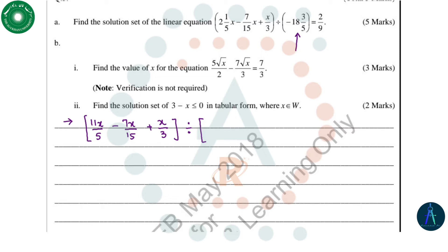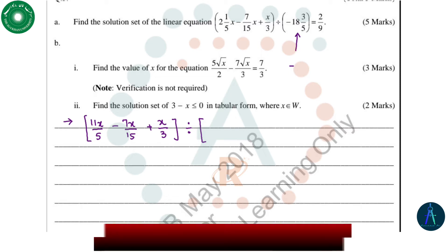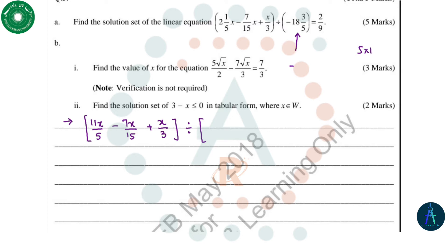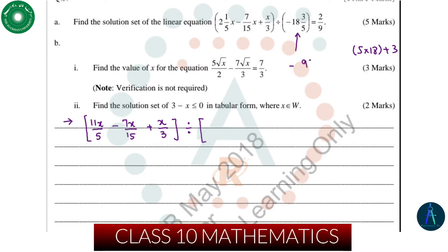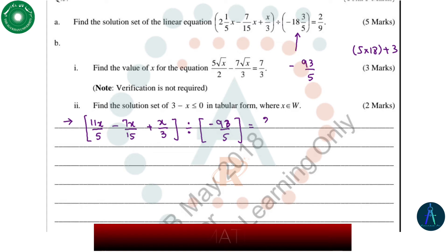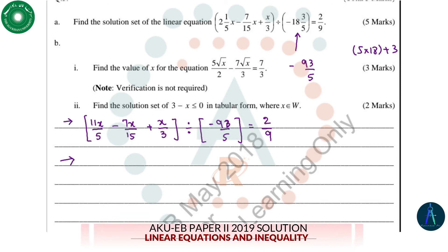The minus sign will remain as it is, and 5 will be multiplied by 18, that is equal to 90, plus 3. 5 multiplied by 18 and then plus 3, so this will become 93 over 5. After division...